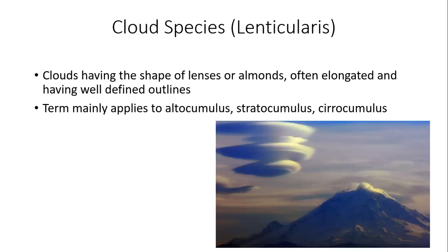Another really interesting cloud species is lenticularis. These have been mistakenly identified as UFOs by many people. They have a UFO shape — more of an almond or lens shape — often elongated with well-defined outlines. They primarily occur in the vicinity of mountainous terrain or topographical changes. The term applies to altocumulus, stratocumulus, and cirrocumulus clouds. One of the more common forms is the altocumulus standing lenticular. This is a very turbulent area — if you're a pilot, you definitely don't want to go near it because it's associated with extreme atmospheric turbulence.